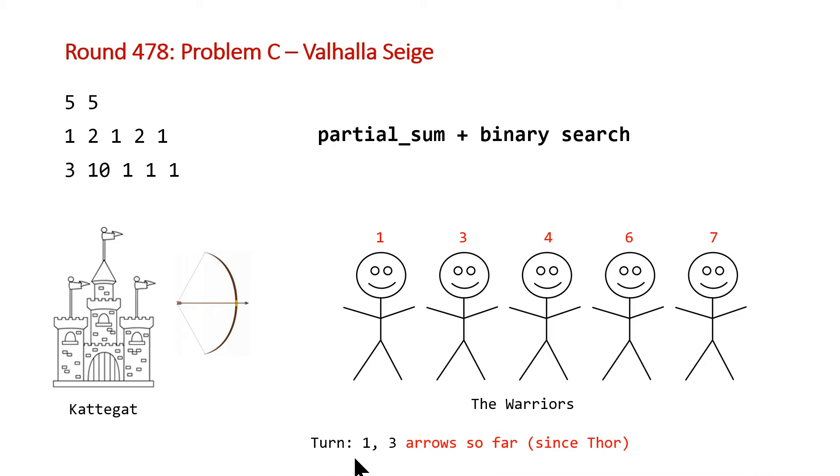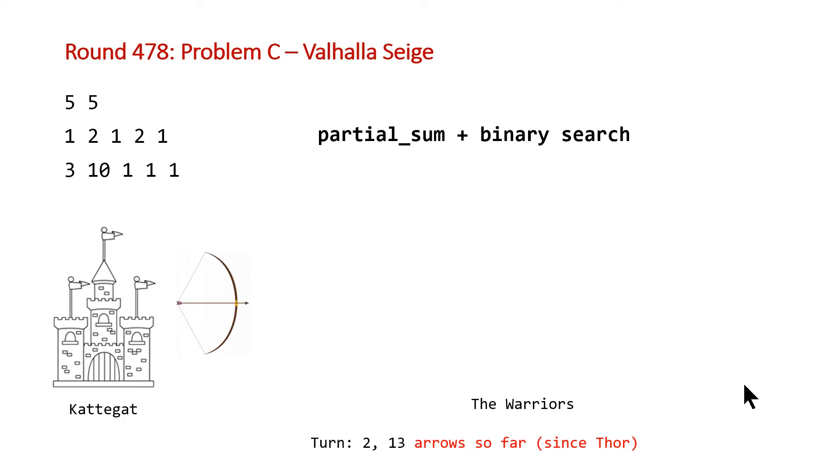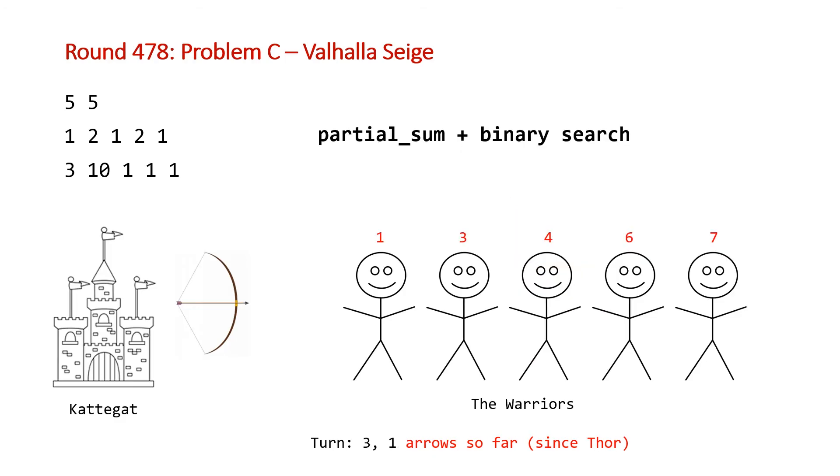So the way this will work is we'll start off once again just with turn one and three arrows. And then we're going to do our lower bound search and look for the first element that is equal to or greater than three. That's essentially what lower bound does. So we'll find this guy here and we'll know that we can knock off both of these warriors. Then we move on to our second turn. We add 10 to our current arrows so far, and that's 13. This is going to be greater than any of the numbers in our running sum vector. So we're going to kill all of these guys off. And then once again, Thor is going to come back, smash his hammer and bring all these guys back to life.